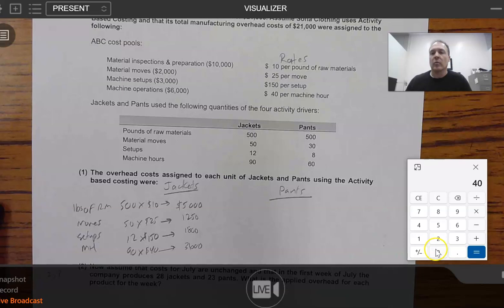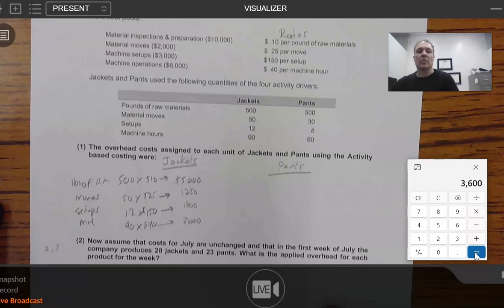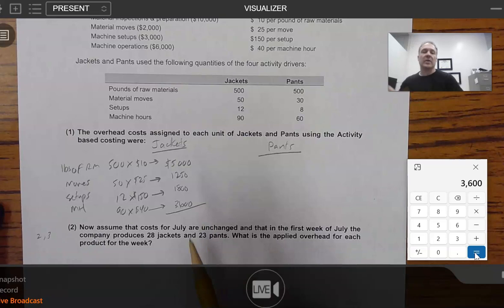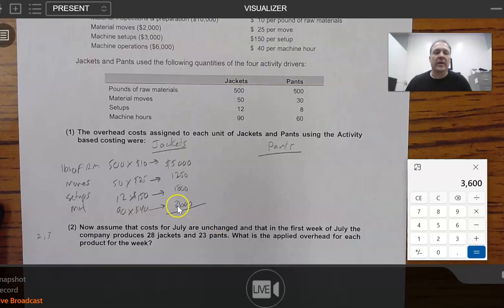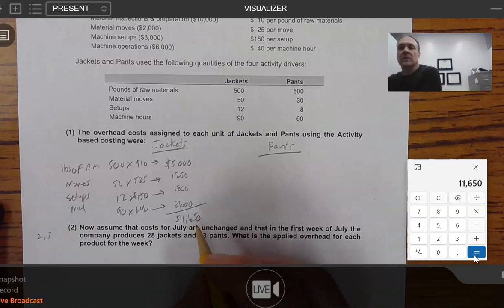And then we've got machine hours still to go. We've got 90 machine hours times a $40 rate per machine hour. I believe that's going to come out to $3,600. We'll go ahead and check the math. 90 times 40 is $3,600. I'm going to have to kind of squeeze this in here. I've got the $3,600 on the calculator already. So, then I'm going to add $1,800, I'm going to add $1,250, I'm going to add $5,000, and that's going to give me $11,650.